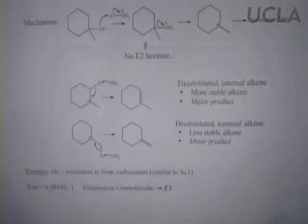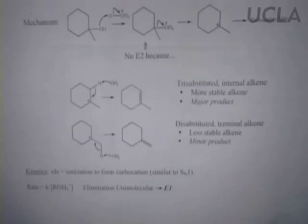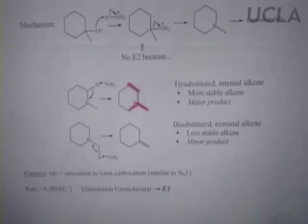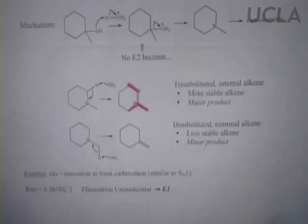When you have two competing mechanism steps, we talked about a general rule to use. The product produced in the greatest amount is generally the most stable one. In this case there are different kinds of alkenes — the internal would be the major one because it's more stable. This alkene is internal and tri-substituted: one, two, three carbons directly bonded to the alkene carbons. The other one is terminal di-substituted, so this is the major product. E1 always, always follows Zaitsev's rule.